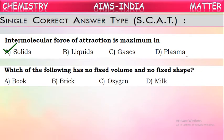Question 2: Which of the following has no fixed volume or no fixed shape? In which state of matter is there no fixed volume and no fixed shape? In the gaseous state. Gases do not have fixed volume or shape — they fill the container in which they are stored.